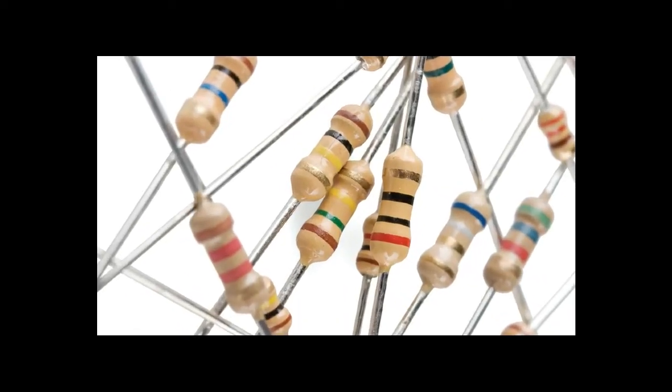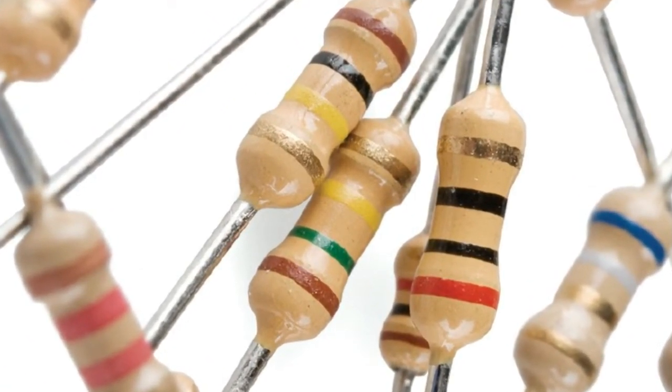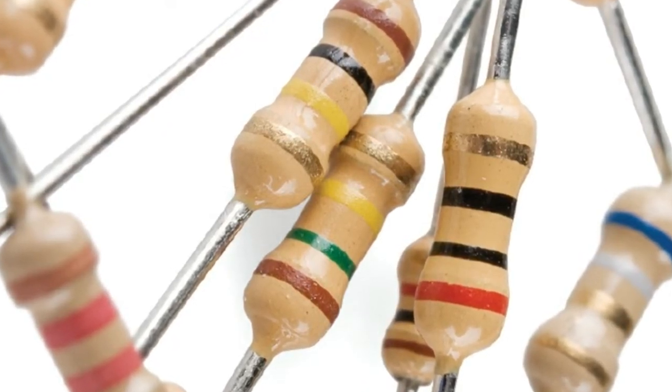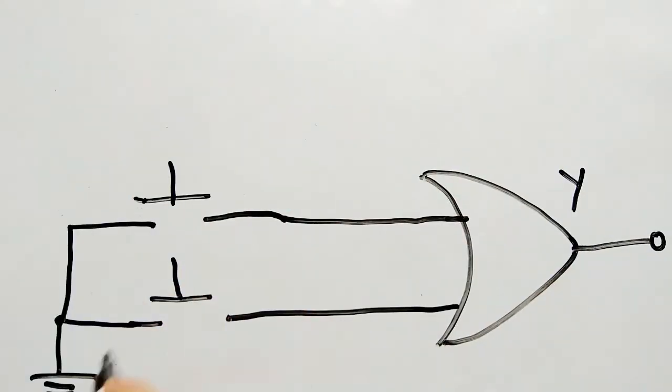So what is a pull-up or pull-down resistor? These are resistors that are used in digital circuits to pull the voltage level in digital inputs equivalent to the level of VCC or to the ground. Consider the OR gate shown here.